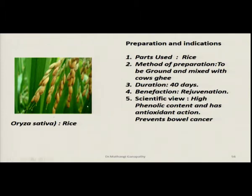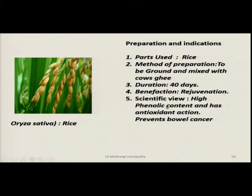The first is Oryza sativa, the common rice. It is normally ground and mixed with cow's ghee — specifically cow's ghee, not buffalo's ghee, as cow's ghee is supposed to have medicinal effects — and when taken for a duration of 40 days this helps in rejuvenation. From a scientific point of view, it has a high phenolic content and antioxidant activity, and when ground and mixed with ghee this preparation prevents bowel cancer.